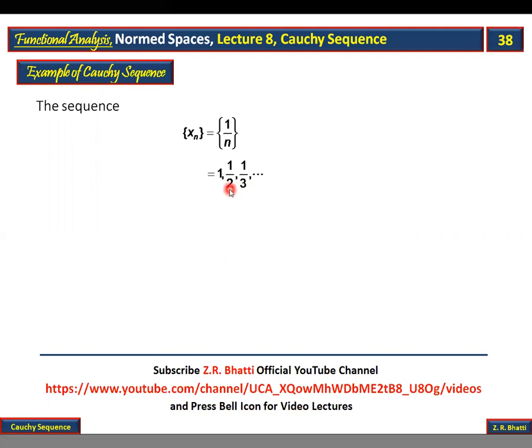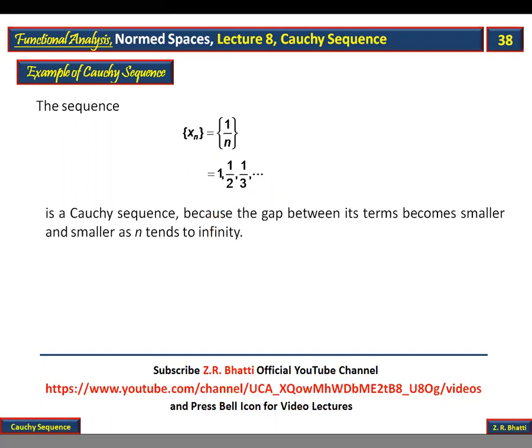The distance between the first and second terms is 1/2. The third term is 1/3, and now the distance between 1/2 and 1/3 has decreased. Similarly, after 1/3 comes 1/4, so the distance between these terms has decreased. This is what we were saying: as your terms, as m and n approach infinity, the distance between pair of terms gradually approaches zero. This satisfies the Cauchy sequence definition, so this is an example of a Cauchy sequence.